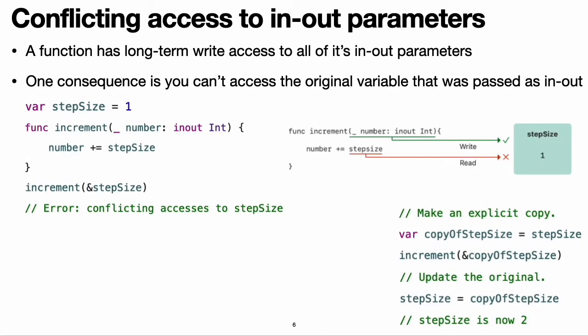Conflicting access to in-out parameters. A function has long-term write access to all of its in-out parameters. The write access for an in-out parameter starts after all of the non-in-out parameters have been evaluated and lasts for the entire duration of the function call. If there are multiple in-out parameters, the write accesses start in the same order as the parameters appear. One consequence of this long-term write access is that you cannot access the original variable that was passed as in-out, even if scoping rules and access control would otherwise permit it. Any access to the original creates a conflict.